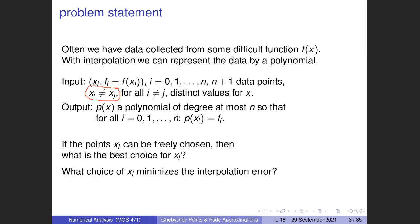Instead of an incremental choice, what if you are free to choose your points wherever you like? What is then the best choice of the interpolation points, and in particular, what choice minimizes the interpolation error? It's actually a minimax problem: we want to minimize the error but maximize the accuracy, and use as few points as possible.